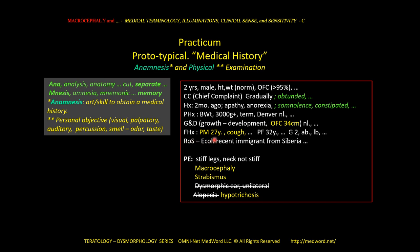Family history: the mother is a young woman, but she is sick and coughing. The father is a young man. They engendered two pregnancies — one ended with a miscarriage and one in a live birth. Review of systems: they are immigrants from Siberia — that is review of ecology, if you like. And in physical examination, we already know the macrocephalus, strabismus, and so forth.